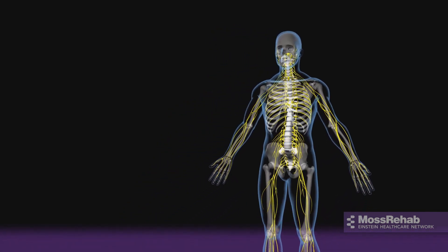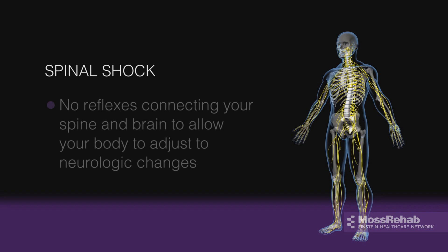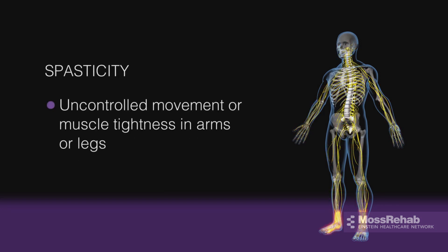Frequently, when you are first injured, your body goes into what is called spinal shock. This is when there are no reflexes connecting your spine and brain to allow your body to adjust to neurologic changes that occur. Over time, spinal shock wears off and your body's natural reflexes will return. When this happens, for some individuals, uncontrolled movement or muscle tightness may develop in your arms or legs. This is called spasticity.